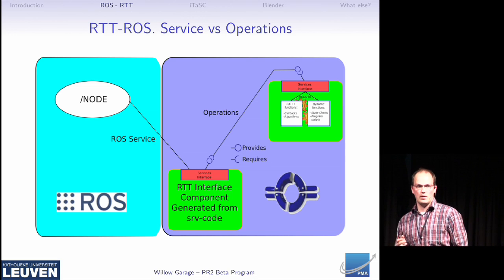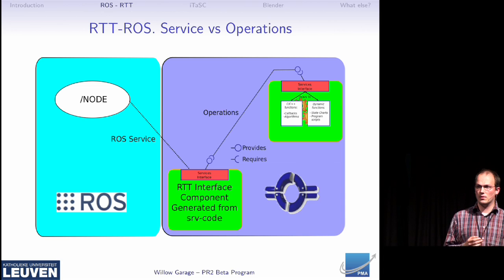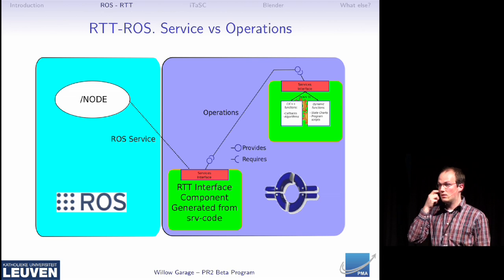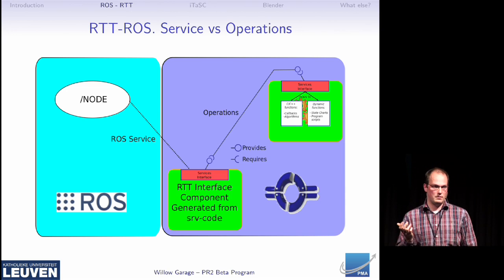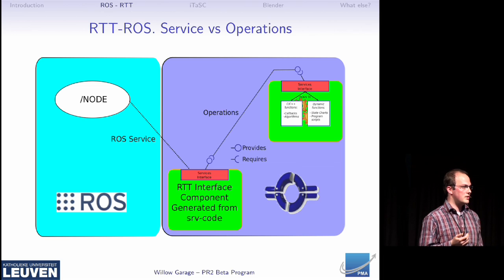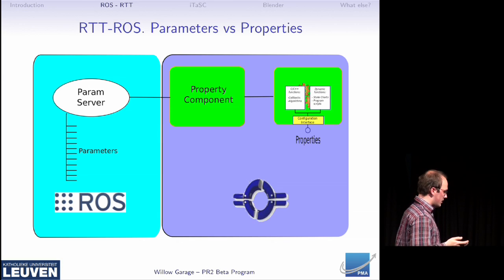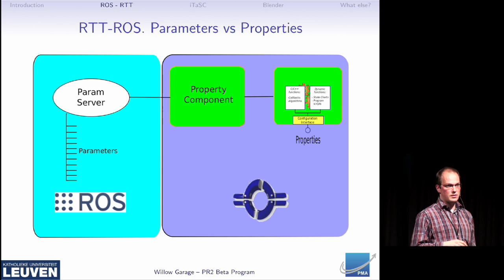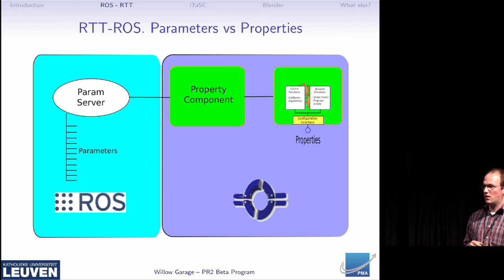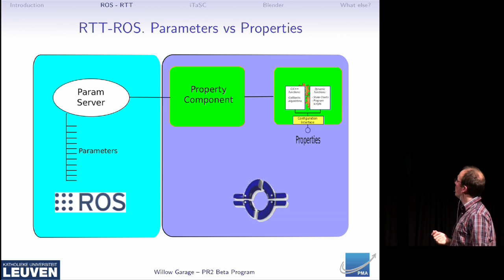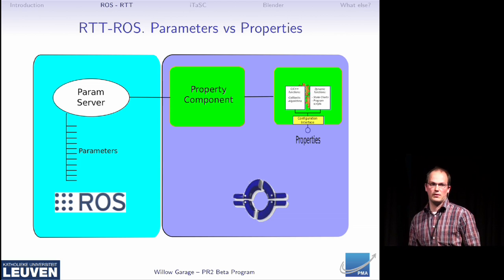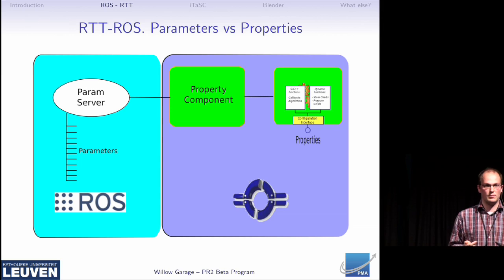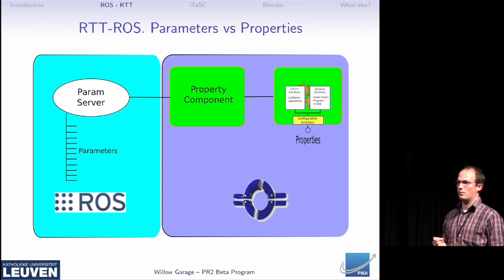For services and operations, we'll generate an extra Oricos component that will be created out of the server file, that fetches the service request and casts it to an operation in Oricos. For properties, we'll do the same — we'll have an automatically generated property component that has full duplex communication. So if you add a property, which can be dynamically added just as in ROS, it will add it on the parameter server and vice versa. If something is added on a parameter server, it will be added in the Oricos framework.